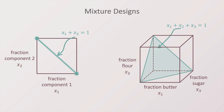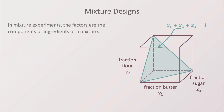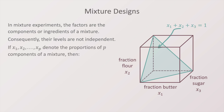To summarize, in mixture designs the factors are the components or ingredients of a mixture, and their levels are not independent. If x1, x2, x3 until xp denote the proportion of p components of a mixture, then each fraction xi must fall between 0 and 1, and the sum of the fractions of all components equals 1, which corresponds to 100%.